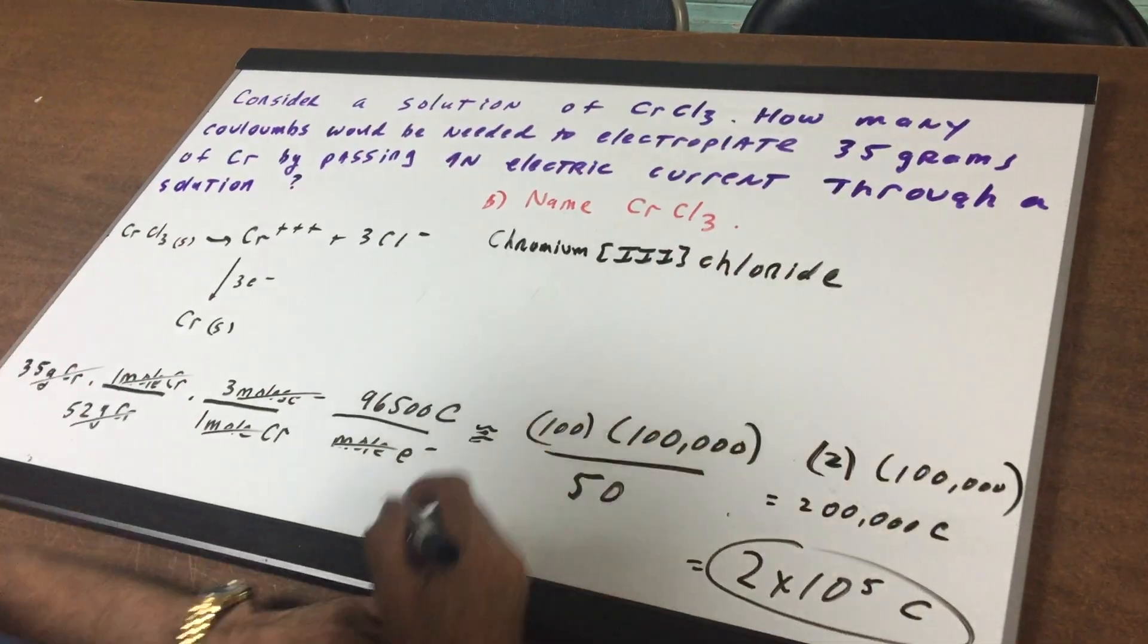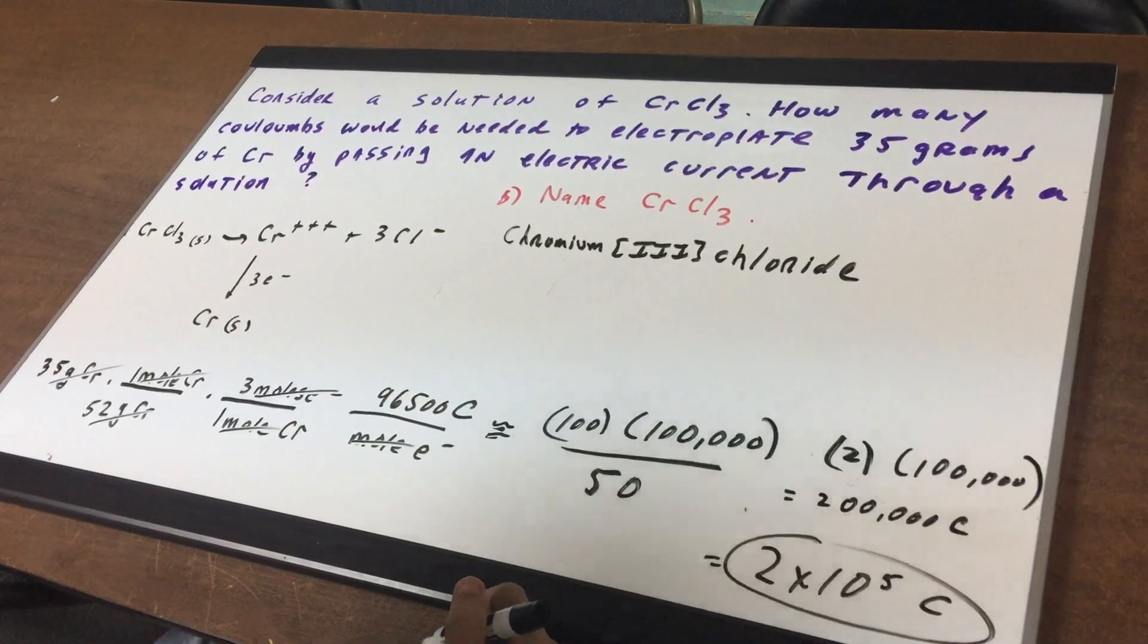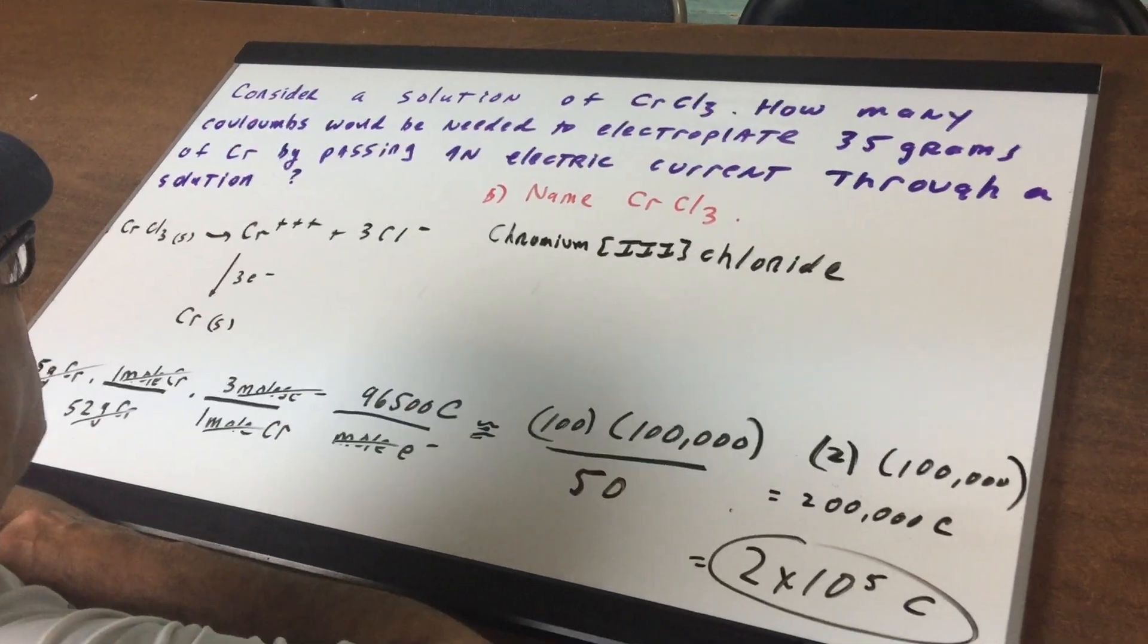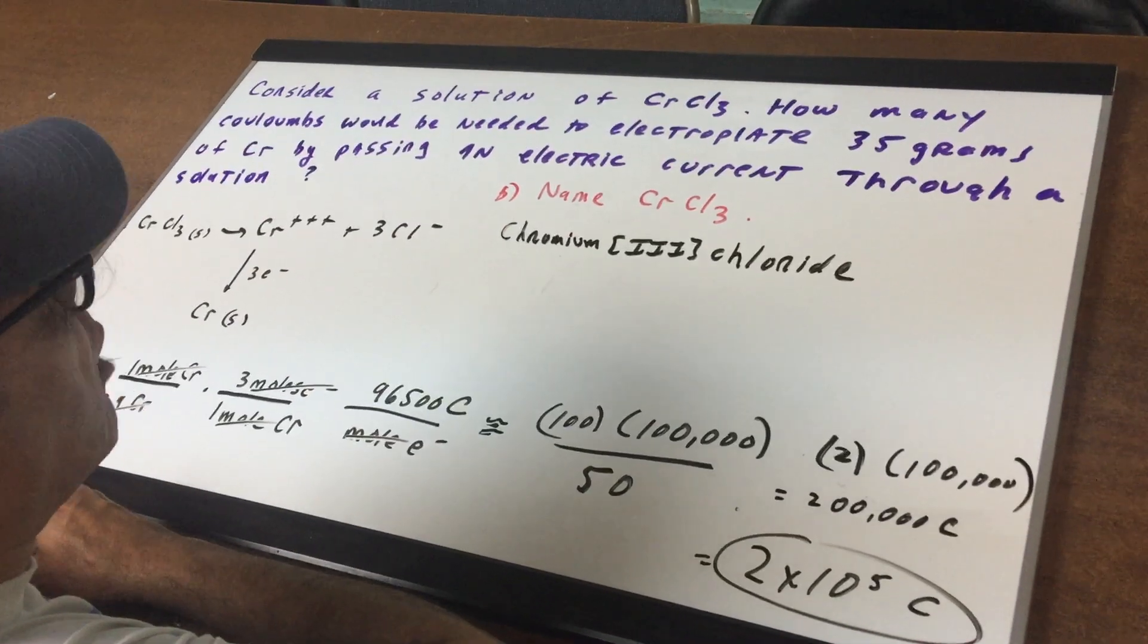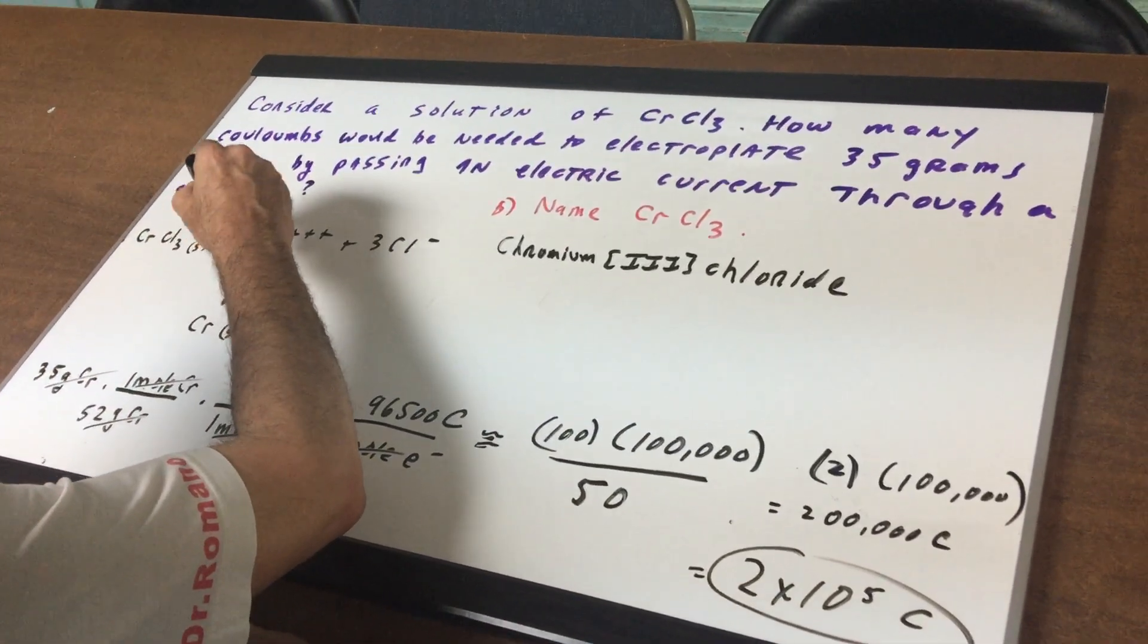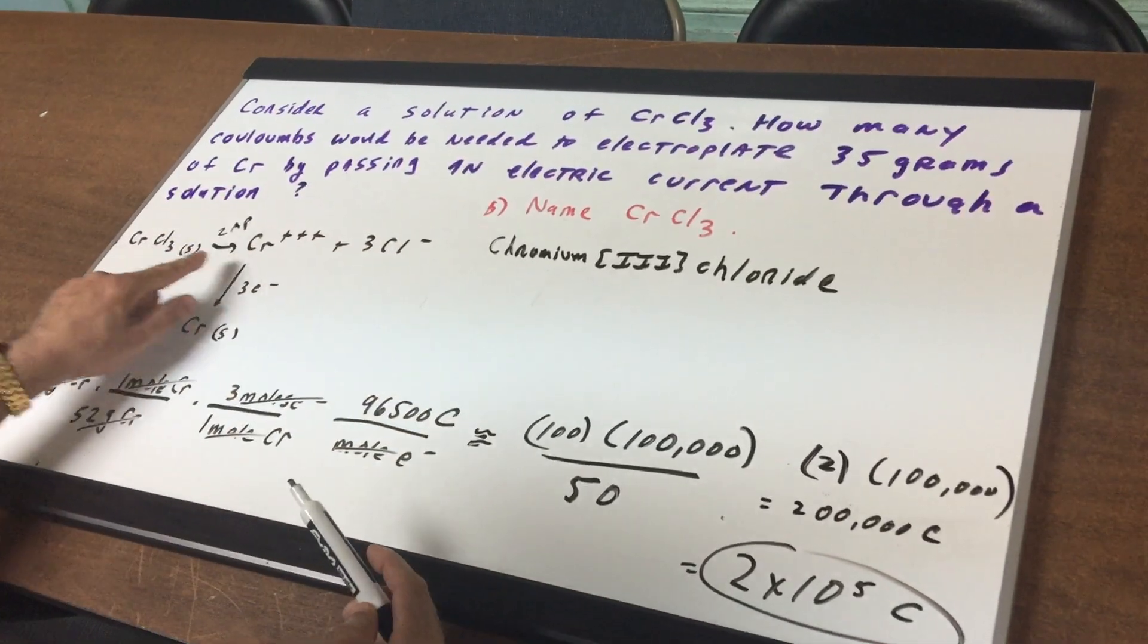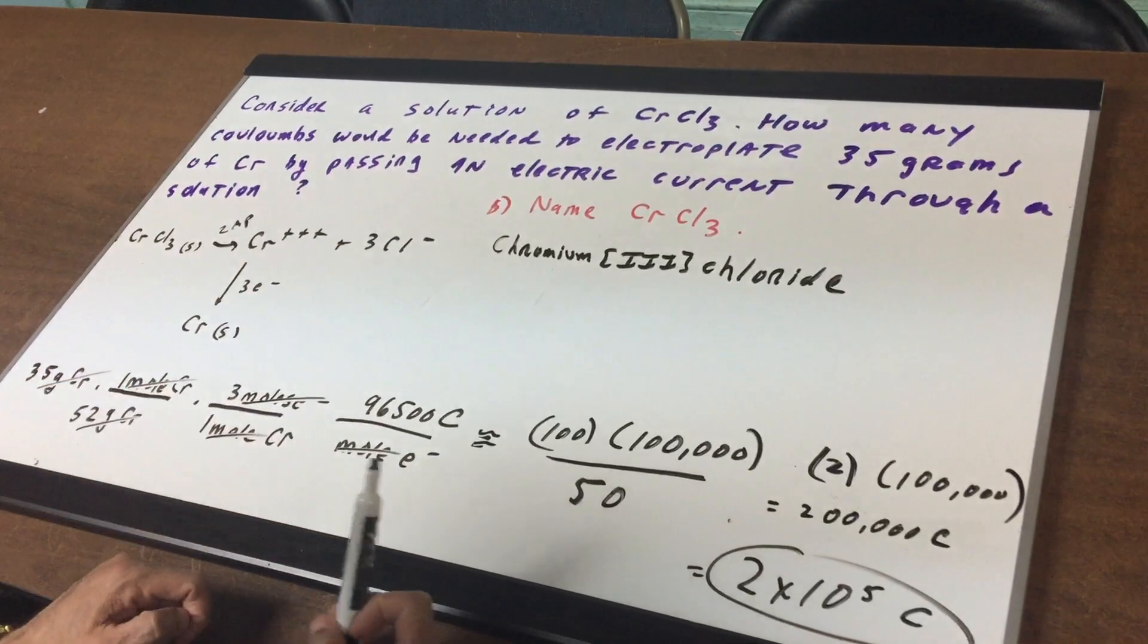Alright, now let's get back to the main question. What we're going to do is we're going to be electroplating a compound and we're going to take CrCl3. So what I do is I zap this with electricity, and it breaks up into chromium plus 3, plus 3 Cl minus.